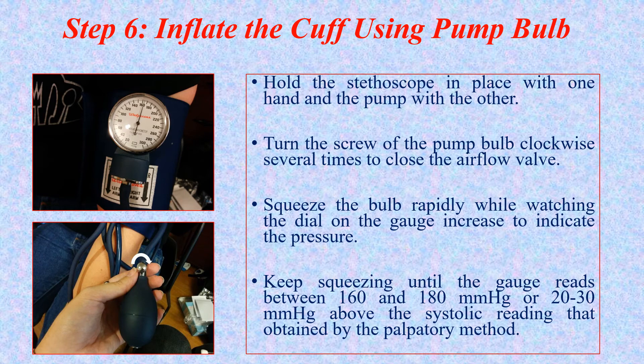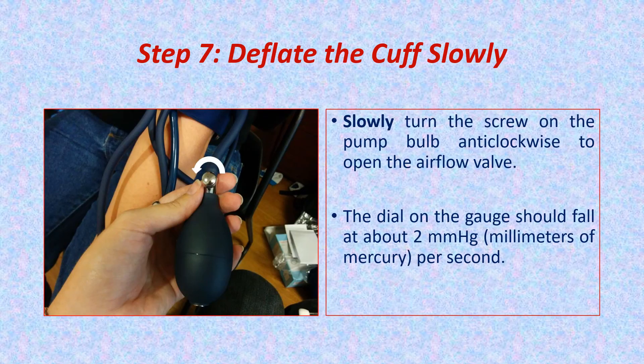If you are using the aneroid gauge device, watch the dial during inflation. If using the mercury device, watch the mercury column during inflation of the cuff. Keep squeezing until the gauge or mercury reading reaches 160 or 180 mmHg, or 20 to 30 mmHg above the systolic reading obtained by the palpatory method. Then begin deflation: slowly turn the screw on the pump bulb anti-clockwise to open the airflow. The dial on the gauge should fall at about two millimeters of mercury per second.